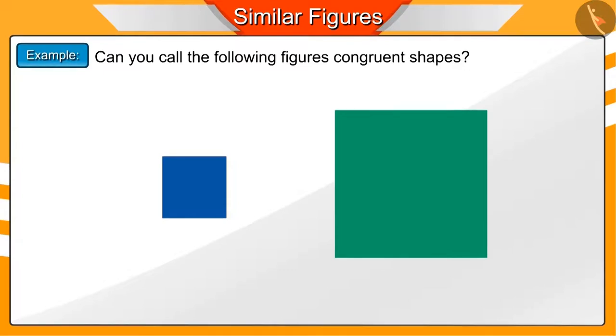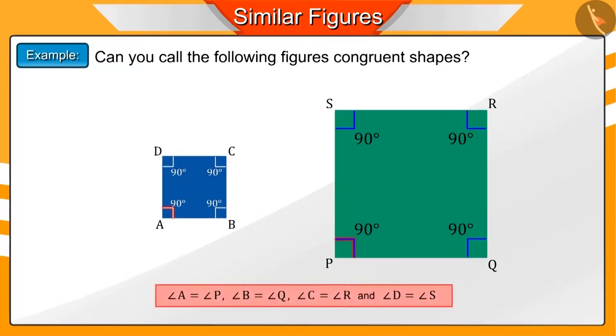If you look carefully, you will find that the side of the smaller square is half the side of the larger square. Now, if we look at the angles of these squares, we will find that their corresponding angles are equal.